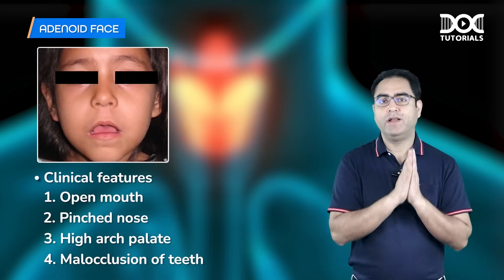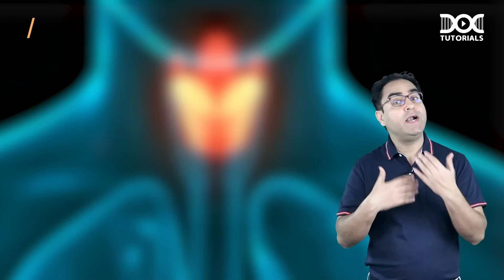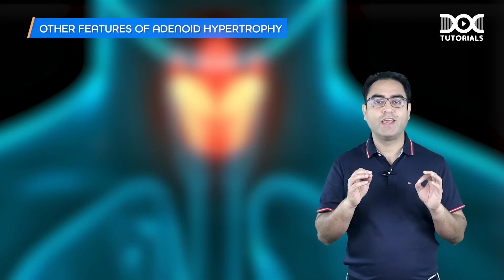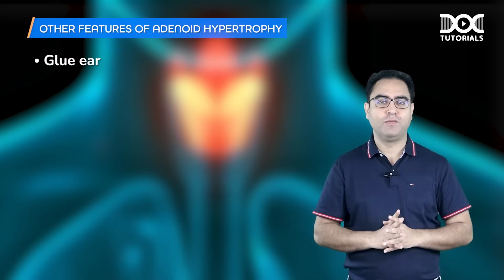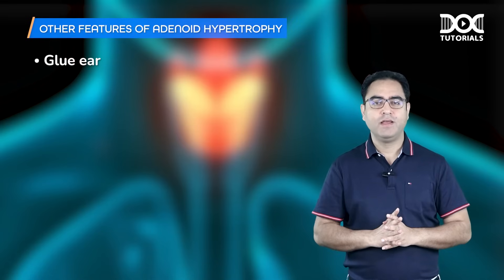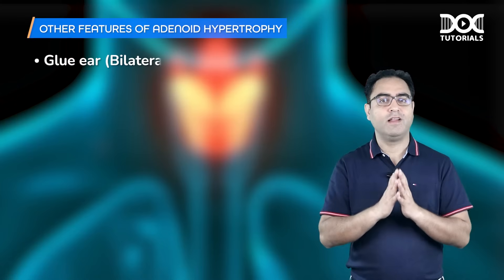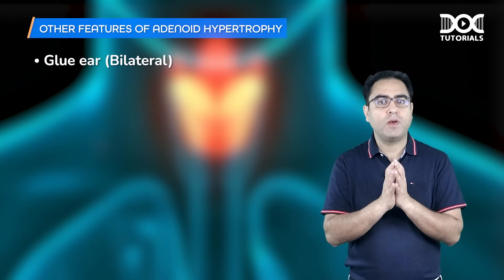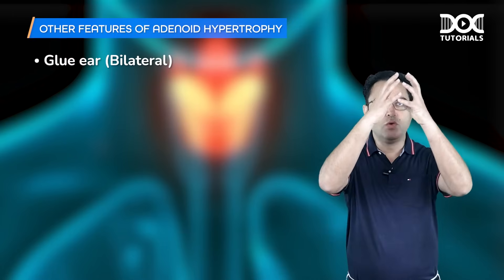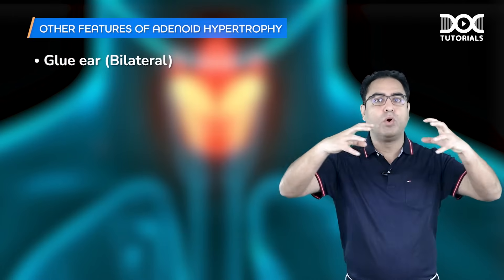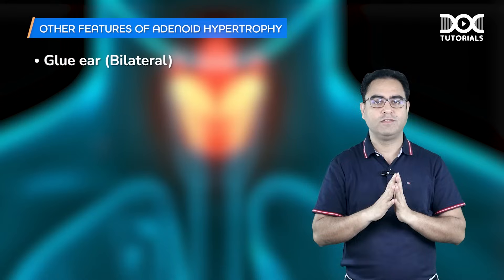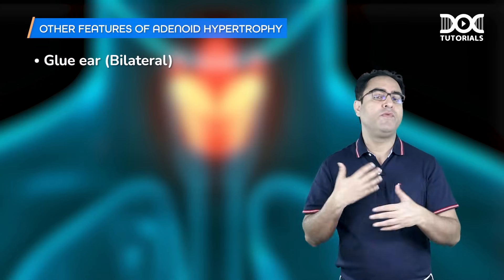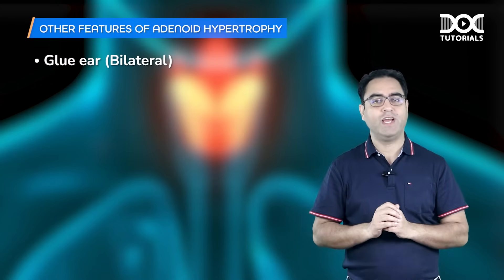This child with adenoid can also have additional features. Very importantly, glue ear is a possibility. Glue ear is mostly bilateral because adenoid is a midline mass — when it enlarges, it blocks both Eustachian tube openings, leading to conductive hearing loss and learning difficulties in school-age children.